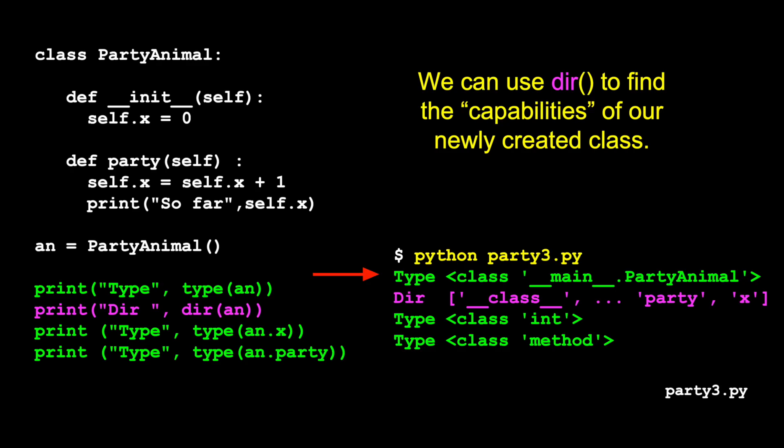And then we use the dir. Remember dir looks for capabilities. And again, you will see a whole bunch of underscore things. They have meaning. You can look them up. But eventually you'll see the two things that you've put in it. One is the method party. And the other is the attribute or field x.